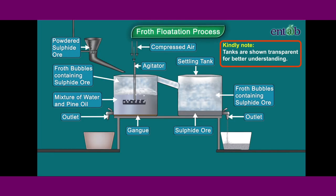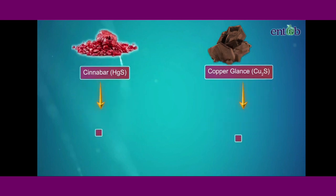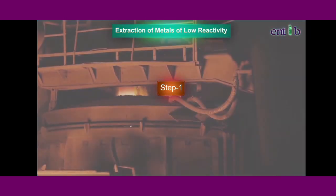So, first, froth flotation method is used to concentrate these sulphide ores. After the concentration of the ore, extraction of these metals involves two steps. Step one is roasting.